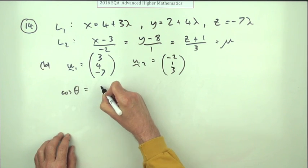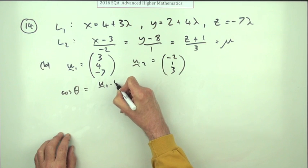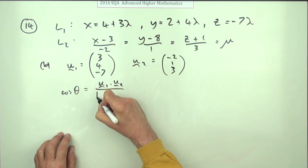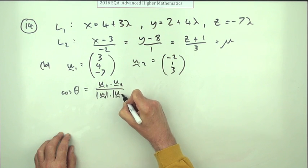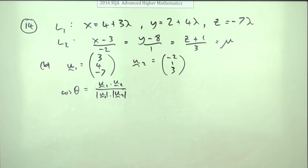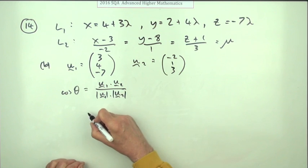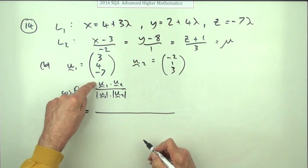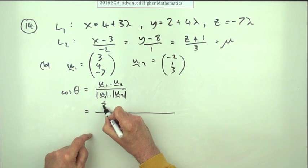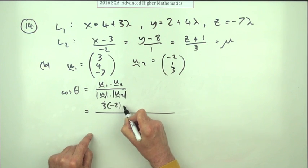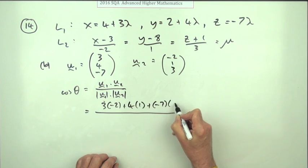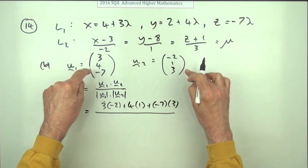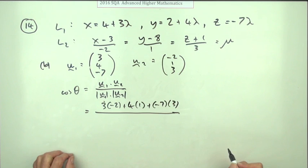The cosine of that angle will be u1 dot u2, the scalar product, over the magnitude u1 magnitude of u2. Now you can work those out separately or do them in the spot. I'll just do them in the spot. So what have we got for the scalar product: 3 times negative 2 plus 4 times 1 plus negative 7 times 3 for the sum of the products of the components.